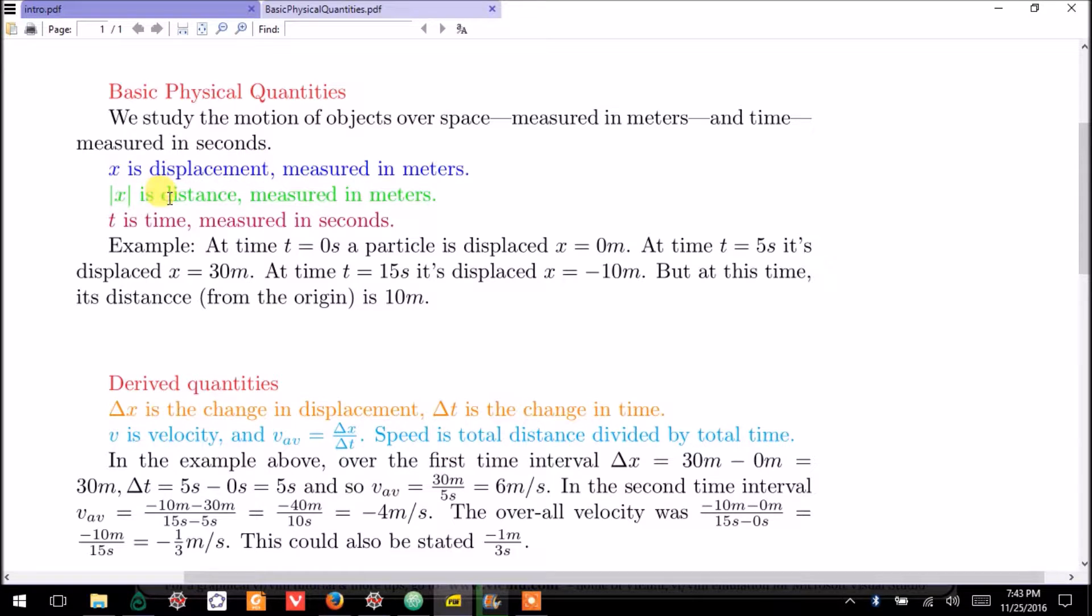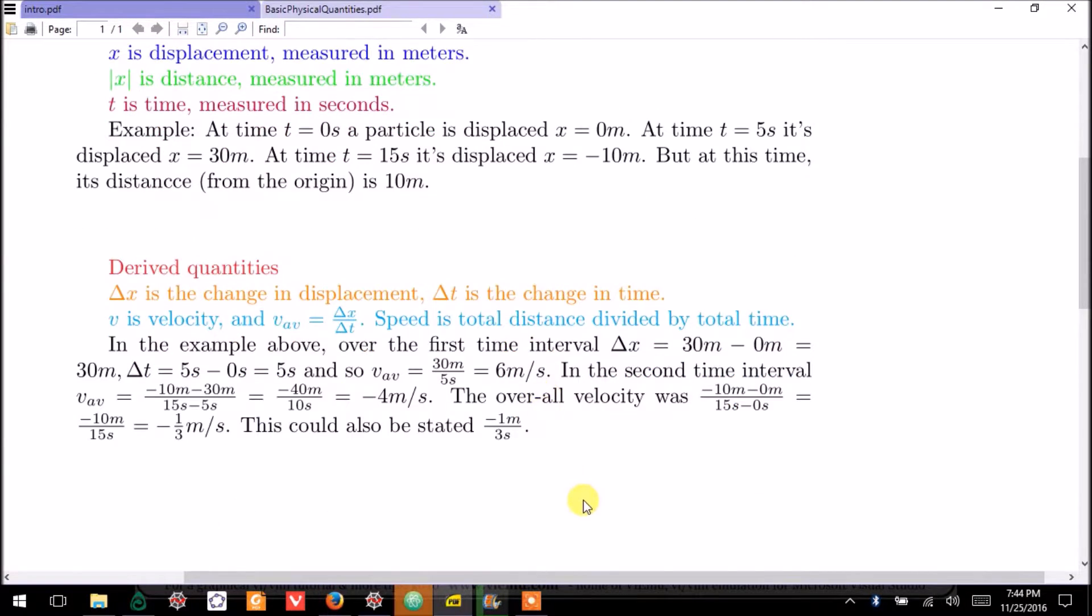I'll define what displacement and distance is and how they are different. I will talk about time and the related derived quantities of delta x and delta t, change in x and change in t. We will define velocity and look at an example.